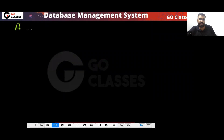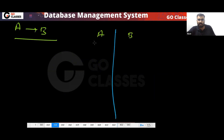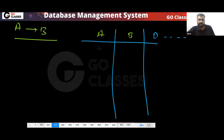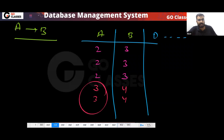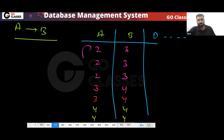Remember this simple point: if you have attribute A determining B, then whenever you repeat the same value of A, B will also repeat. But if you change the value of A, then B may or may not repeat. When you repeat A it will repeat; when you change A it may or may not repeat — that is the idea.